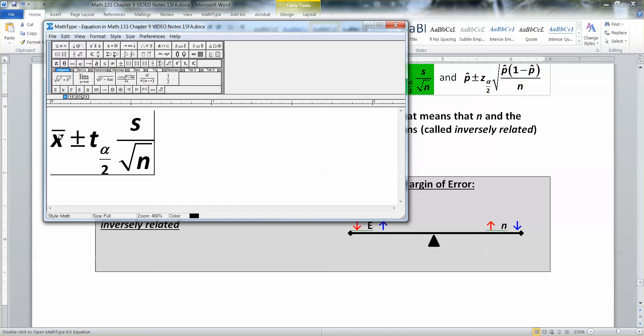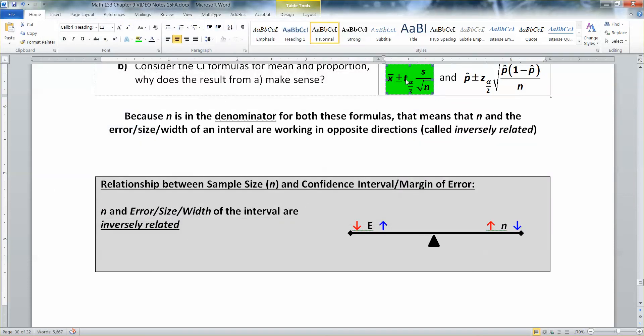All of that's the error. And of course, all of this is the interval itself. And since the n is in the denominator there, it's going to work in an opposite direction from your interval. So if n goes up, error goes down.